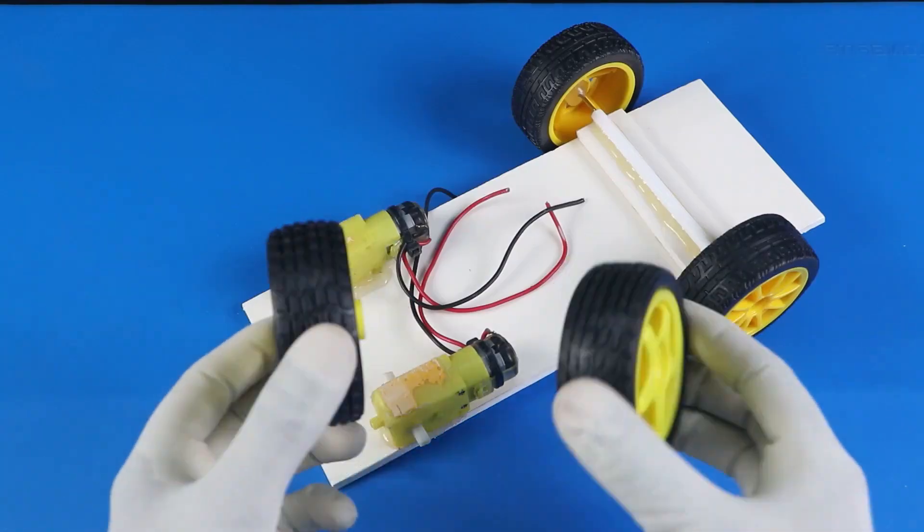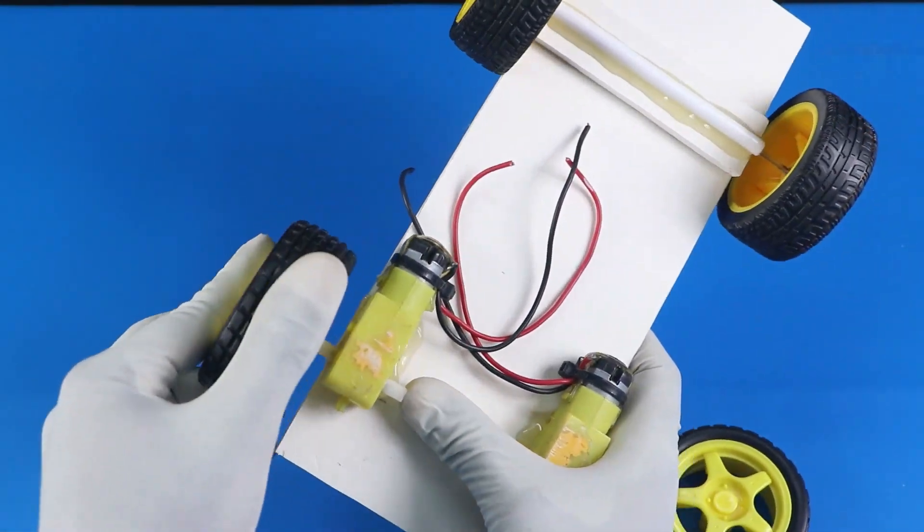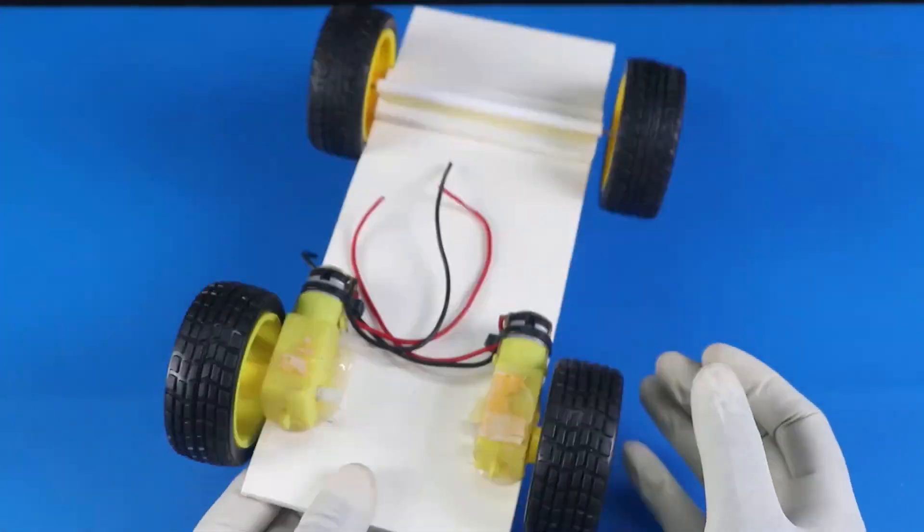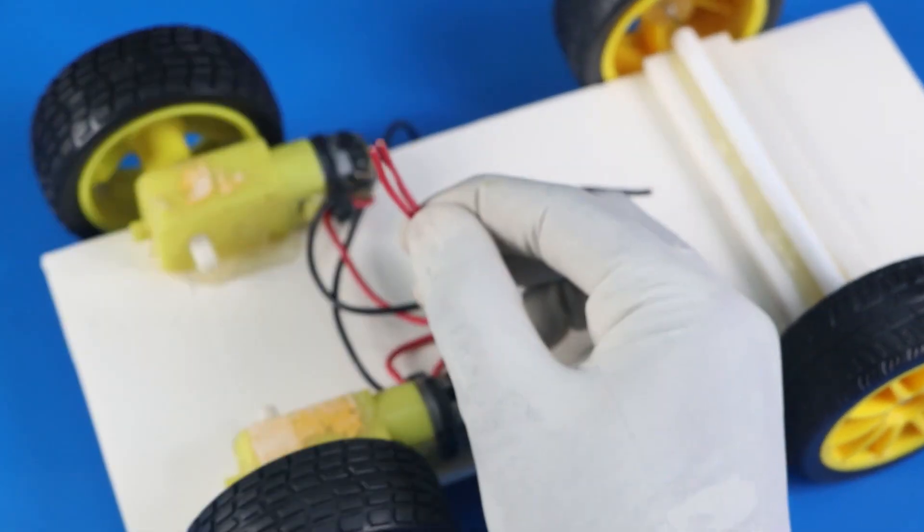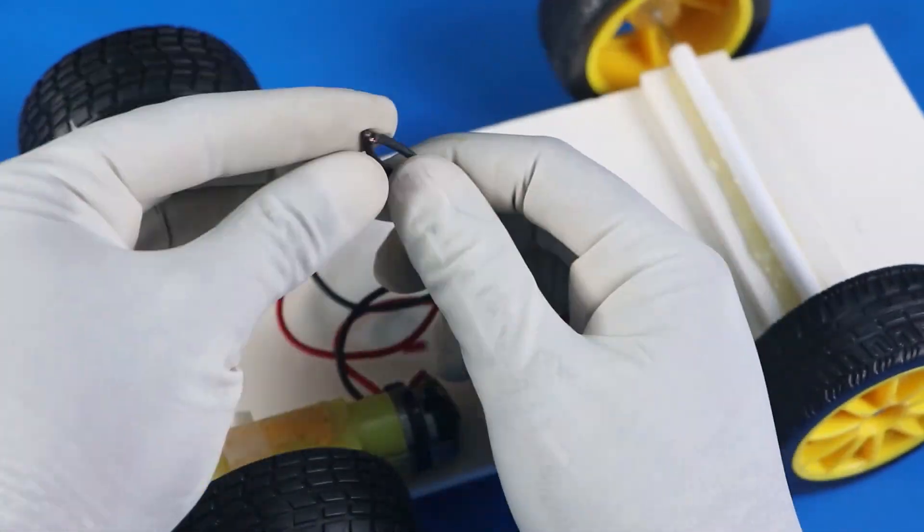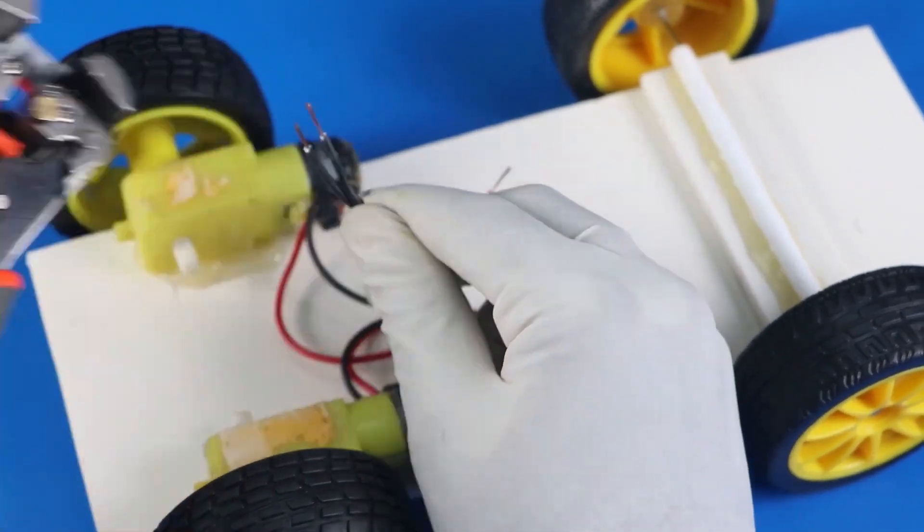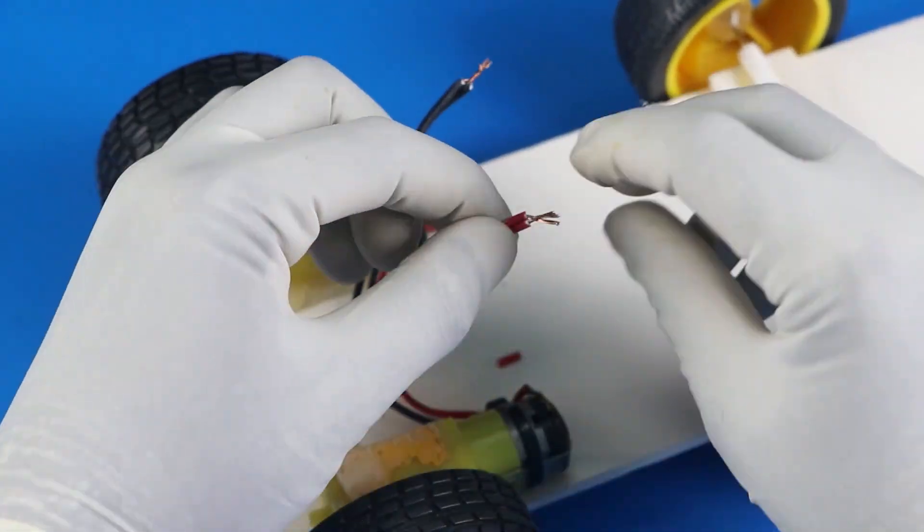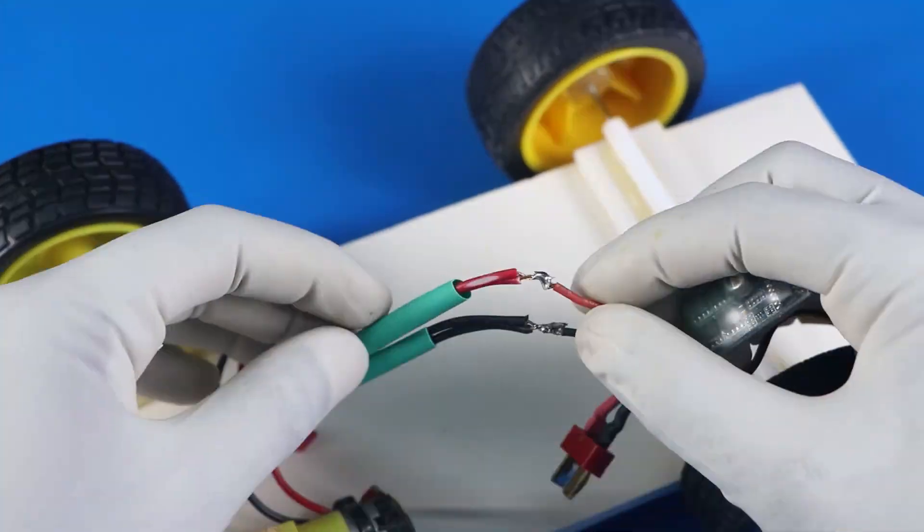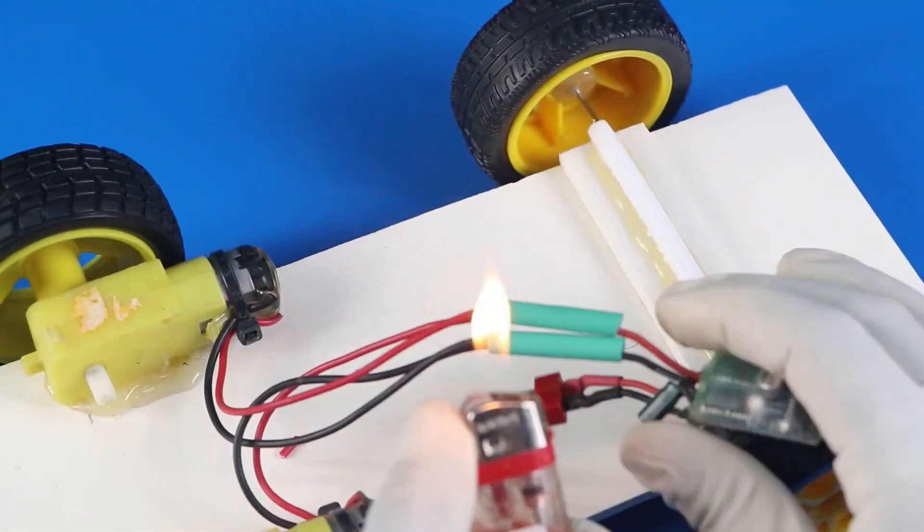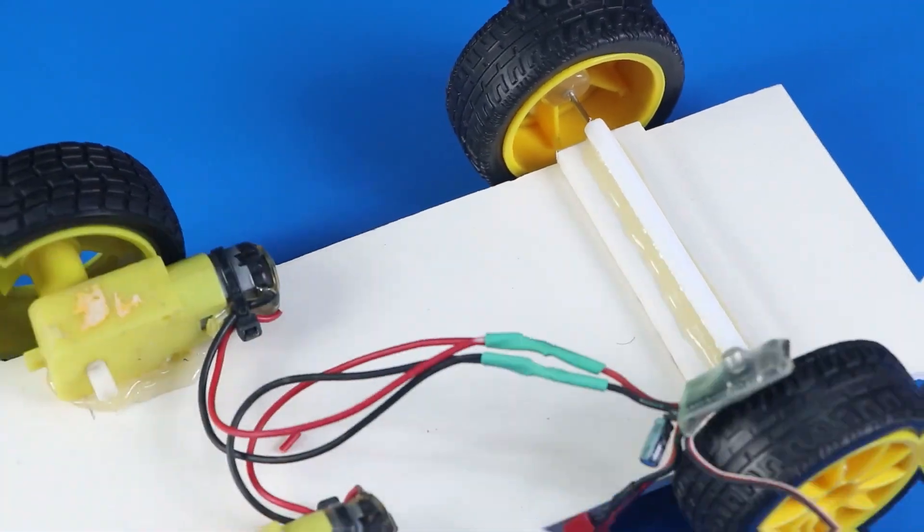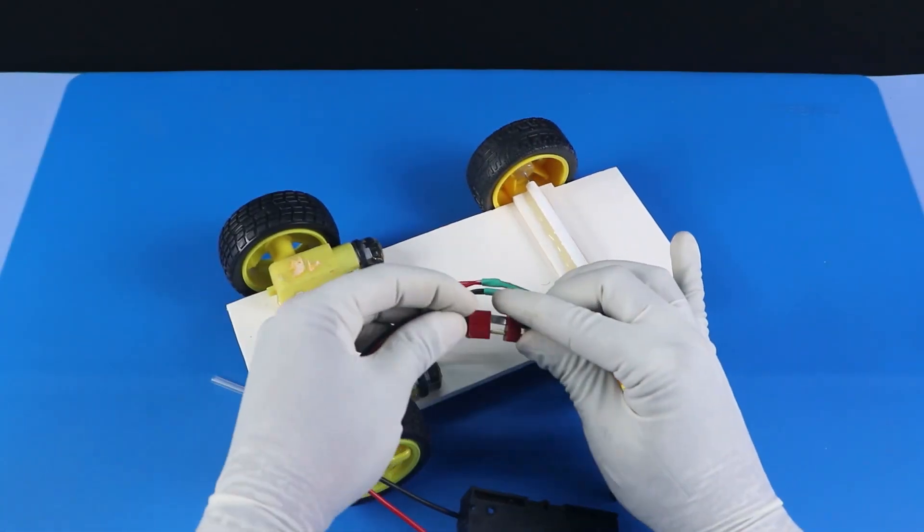The rear wheels are already attached and there is no mechanism, no motor added to that. Only the back part of the vehicle, where we attach the motor, has the drive system.